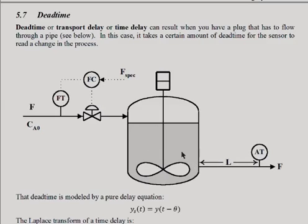That sensor will not know anything about what's going on in the reactor for the time that it takes for that change to flow through this pipe and finally get to the sensor. That time delay is called dead time.